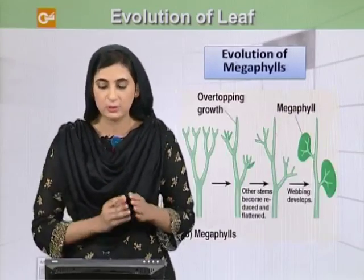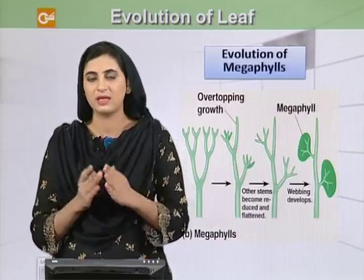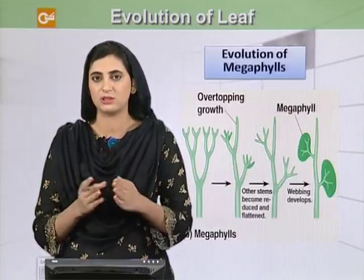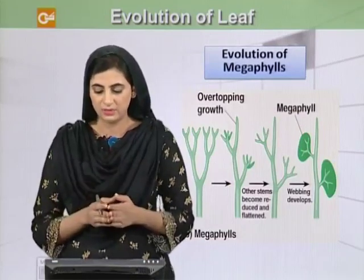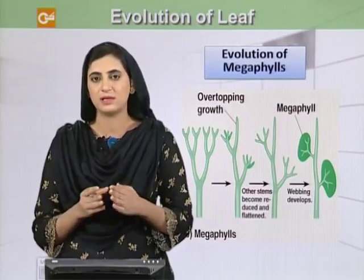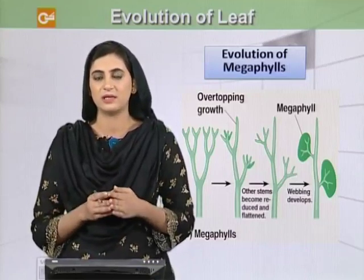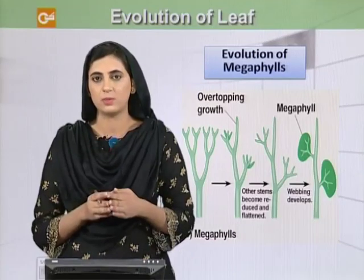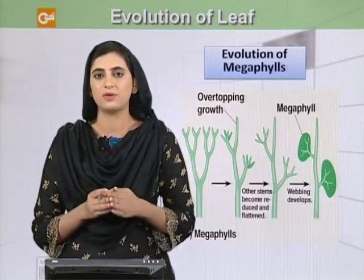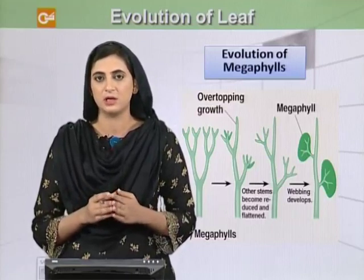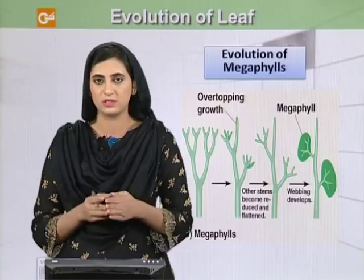In contrast to microphylls, there are megaphylls, which are expanded leaves with a strong venation system and more veins, and that is why they are called megaphylls. Scientists believe that the evolution of these megaphylls started in primitive seedless plants about 350 million years ago, and it took about 15 to 20 million years for the whole process of evolution of these megaphylls.